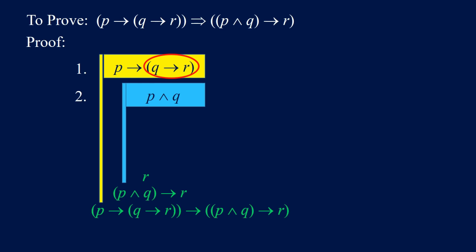We can apply the elimination of implication, but we need P first. P is in the blue flag in the form of P and Q. We can get P from there by applying the elimination of AND to 2, indicating this with 3. Now we have P, so we can apply the elimination of implication to 1 to get Q implies R, indicating this with 4.